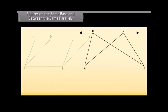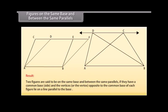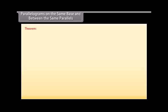So, we can say that two figures are said to be on the same base and between the same parallels if they have a common base side and the vertices or the vertex opposite to the common base of each figure lie on a line parallel to the base. Theorem: Parallelograms on the same base and between the same parallels are equal in area.